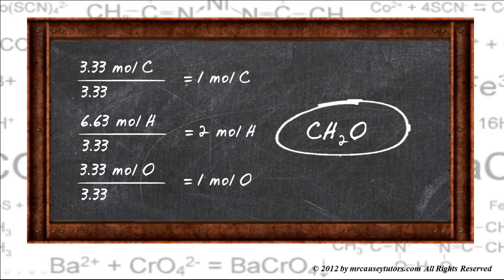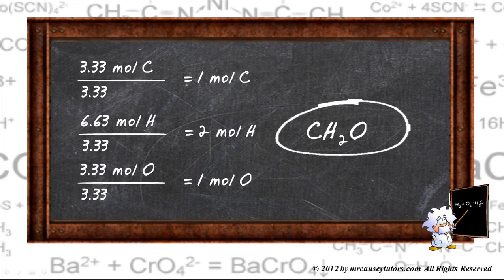We get two moles of hydrogen, and we get one mole of oxygen. Well, if we look at that, that means we get one carbon, two hydrogen, and one oxygen, and our empirical formula is CH2O. But that's the empirical formula, not necessarily the molecular formula. Let's take a look at the molecular formula.